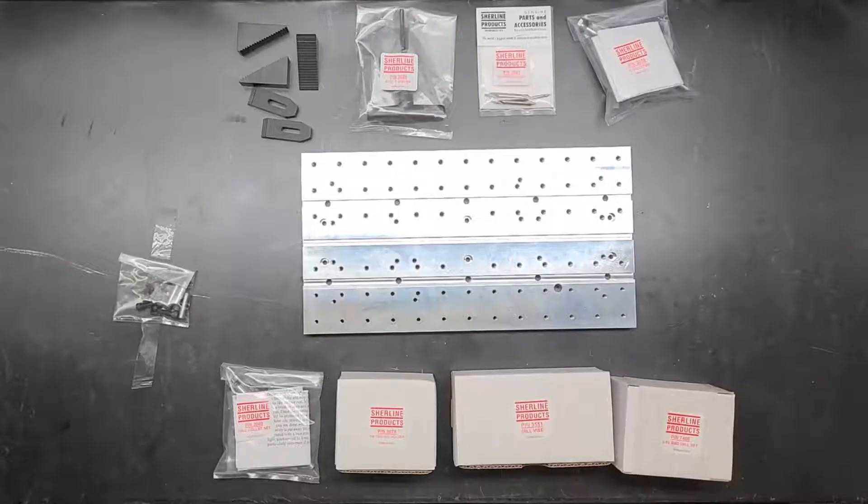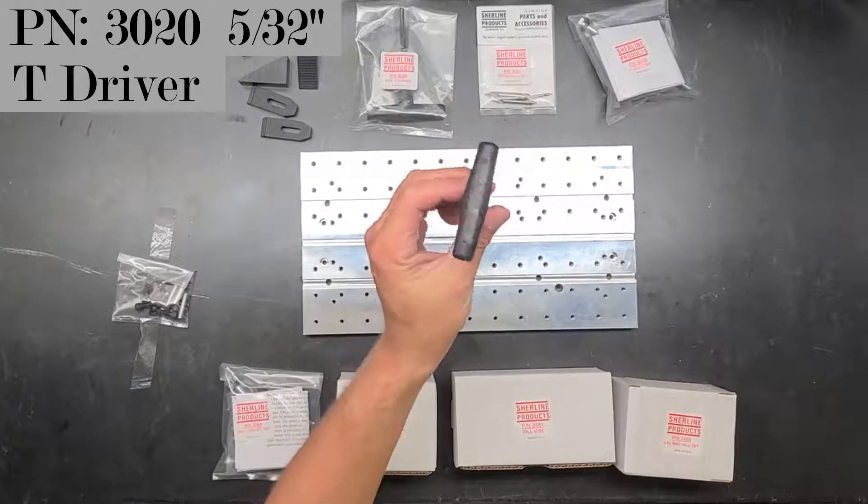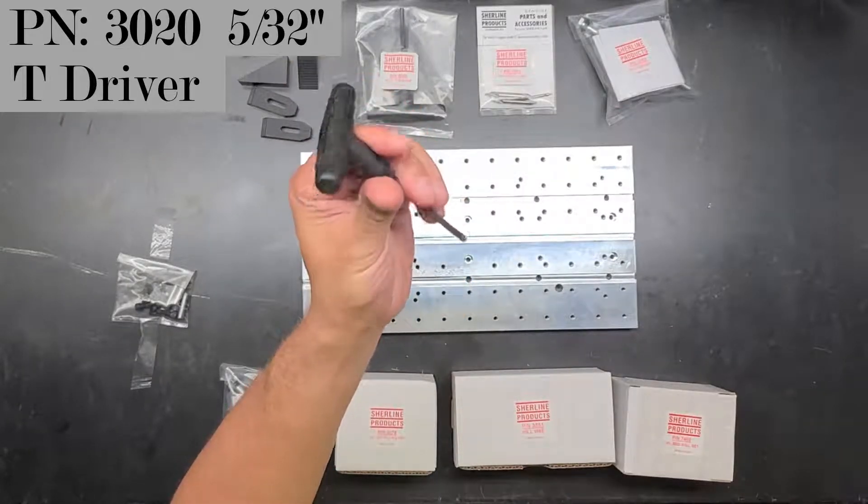Looks like it comes with three of these triangular ones and then two of these ones. The next item on the agenda is the Sherline T-driver in 5/32, part number 3020. Here is mine that I've been using from the lathe. They're identical.